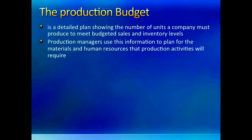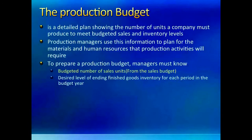A production budget shows how many units the company would be making each month. You might think this should equal what the company can sell, but companies want to keep a little more than exact sales needs to minimize the probability of stock run-outs in case of a sudden rush of demand or any other emergency. The production budget becomes the basis for buying raw material, labor, consultants, and other ingredients for future production. To make a production budget, we need to know what we can sell and what we want to keep in ending inventory.